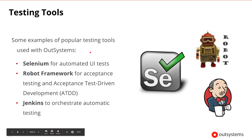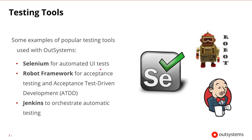There are a number of different testing tools available, such as Selenium for automated UI tests. With Selenium, you can record, edit, and replay scripts that mimic user interactions, and you can create robust browser-based suites of regression tests. The Robot Framework is a generic testing automation framework that allows for acceptance testing and acceptance test-driven development. Its testing capabilities can be extended using libraries implemented in Python or Java. And there's Jenkins, to orchestrate automated tests like unit tests, UI tests, or API tests. These and other popular testing tools can be used with OutSystems.